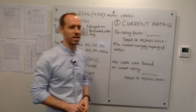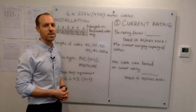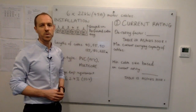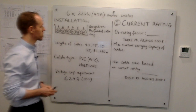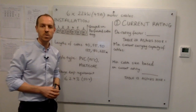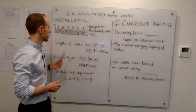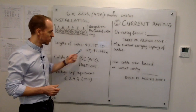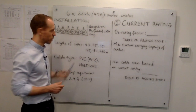Let me explain the example. We've got six 22 kilowatt motors, each requiring 45 amps per phase — so these are three-phase motors. These six cables are going to be installed on a perforated cable tray, touching. Each of the six cables goes to each of the six motors.